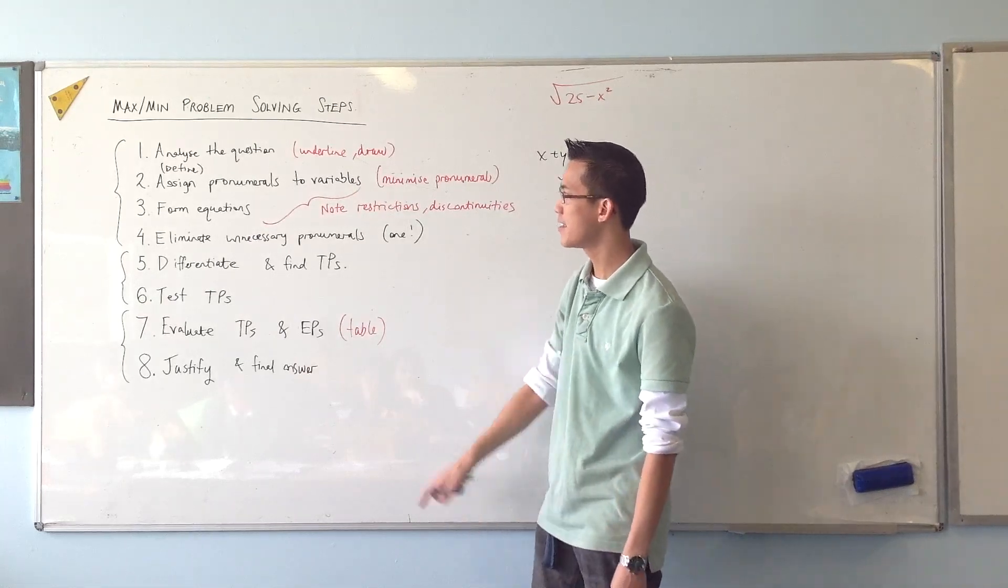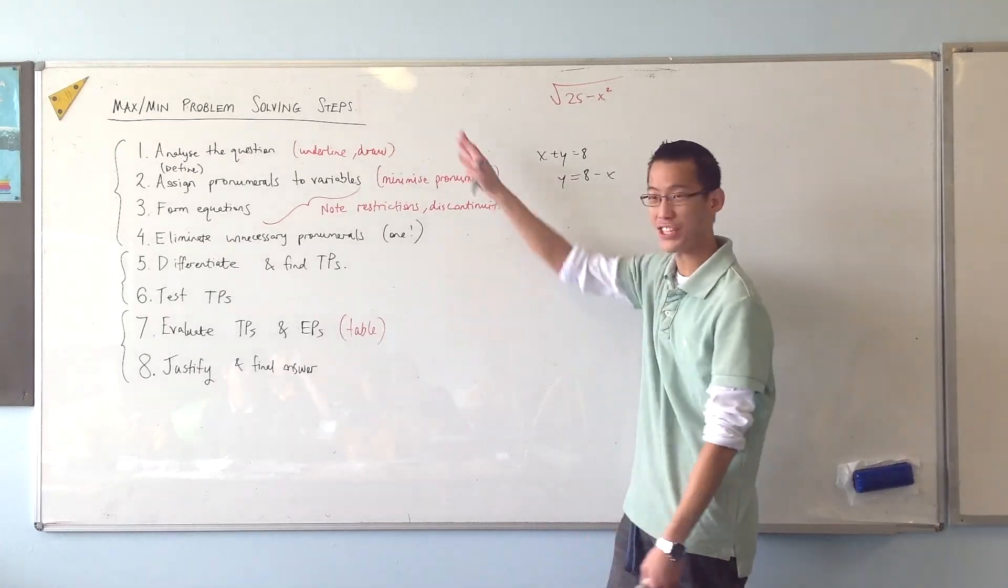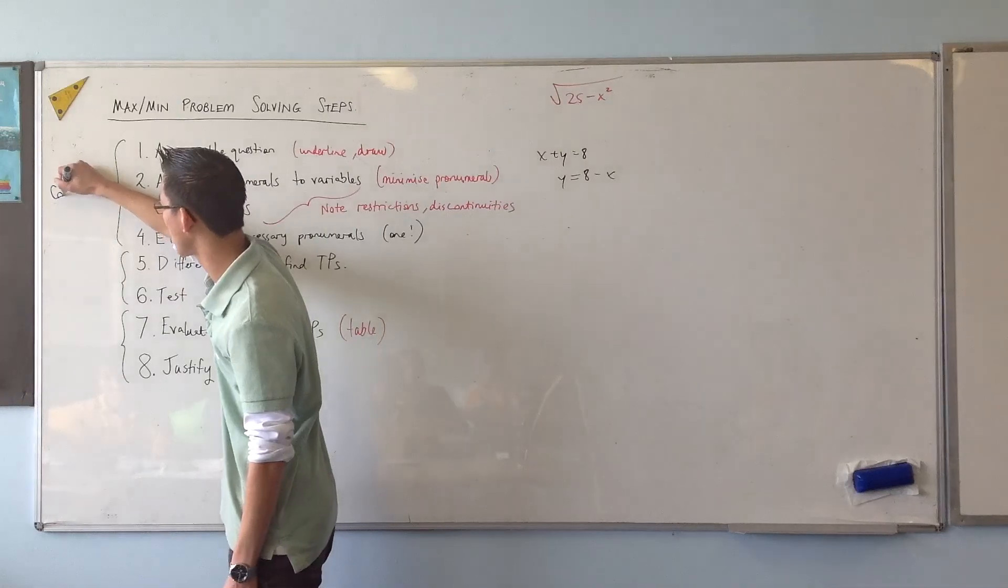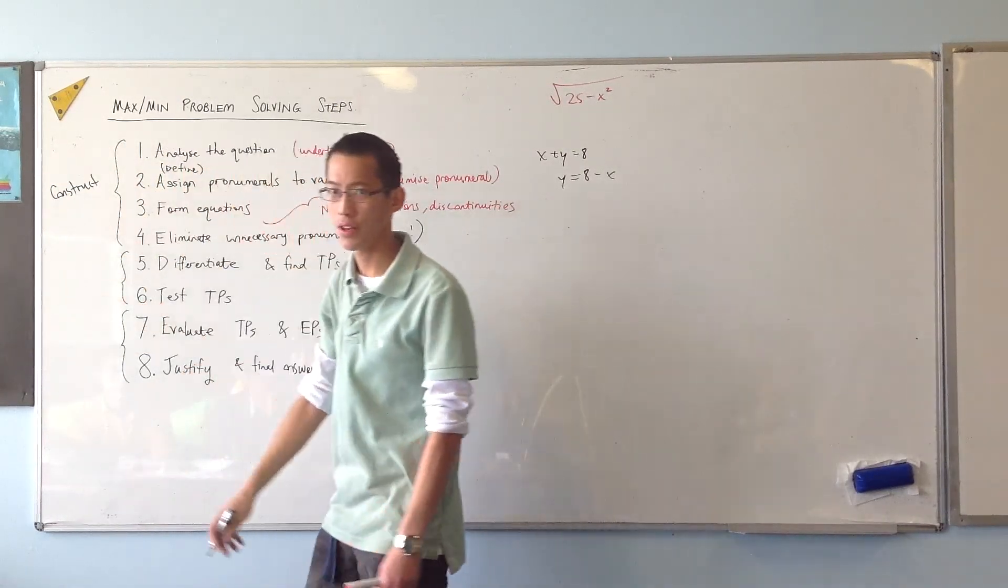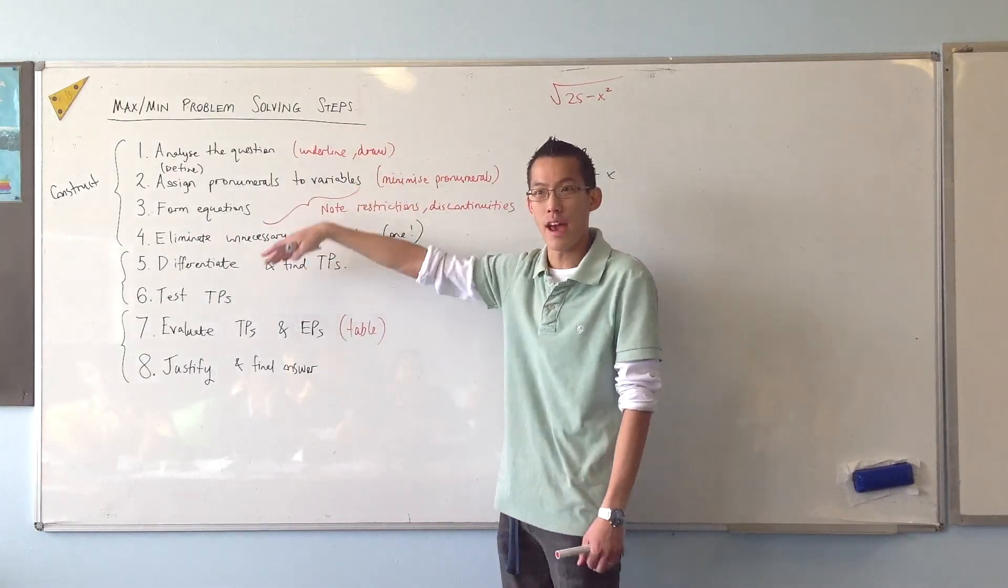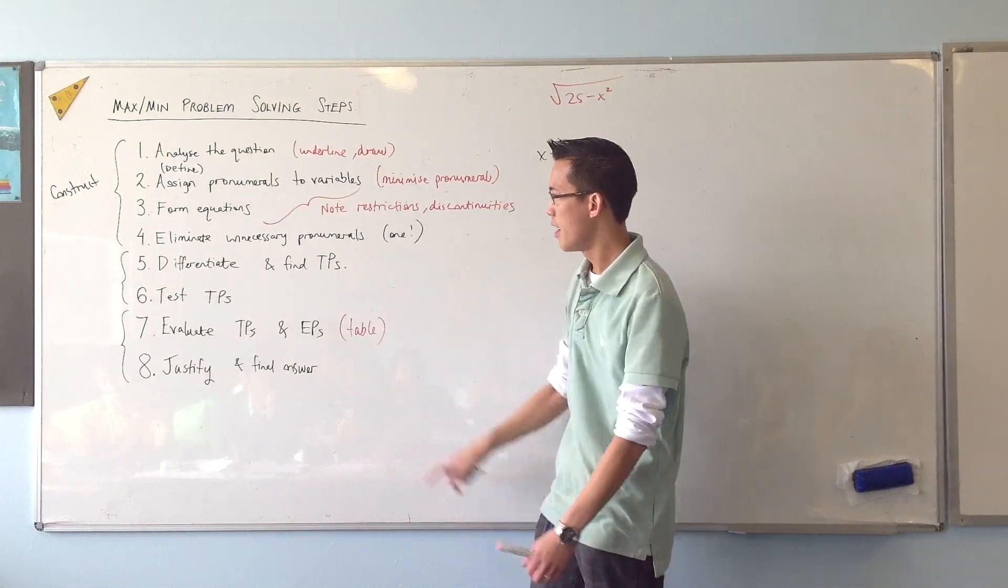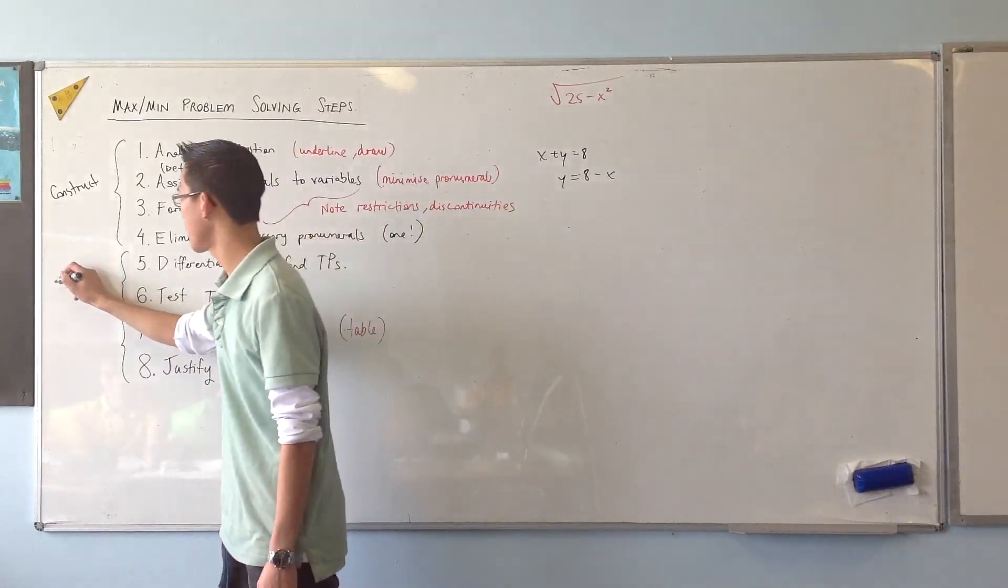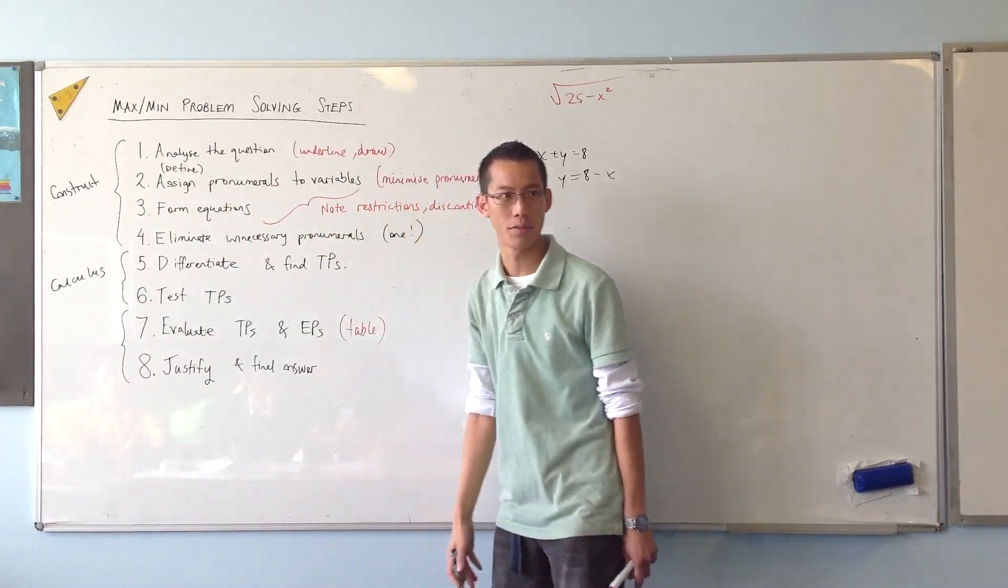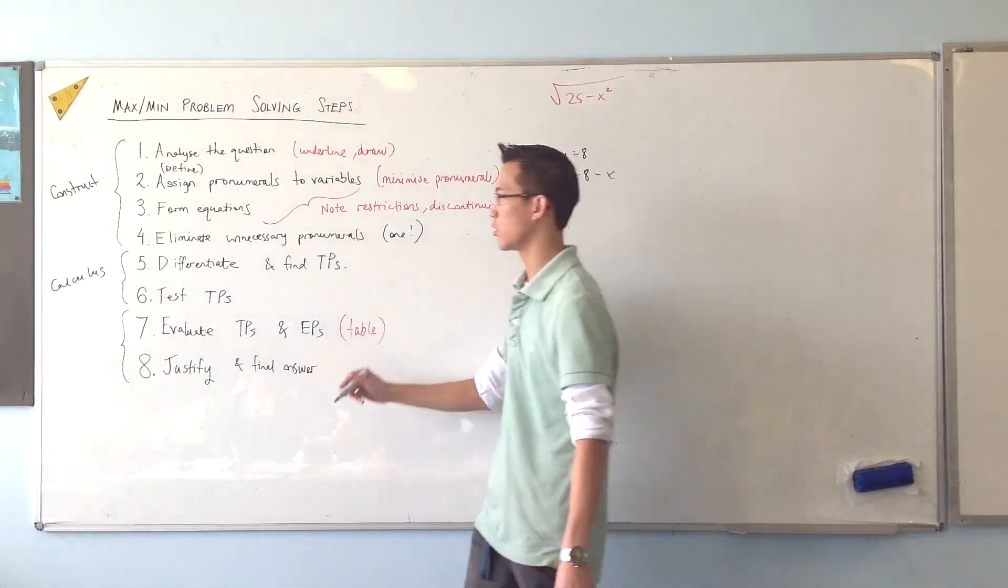All right, so I said there are my eight steps, and you can sort of group them together into three stages. This first bit here, we're really actually constructing the question that we're trying to solve. You're putting everything together, you're setting it up, you're making sure everything's in the right position before you actually begin to go through problem solving. This step in here, this is the calculus step. This is where you bring in all of your knowledge of stationary points and differentiations and so on. And then last thing, just conclude.